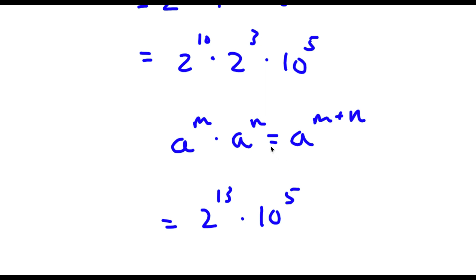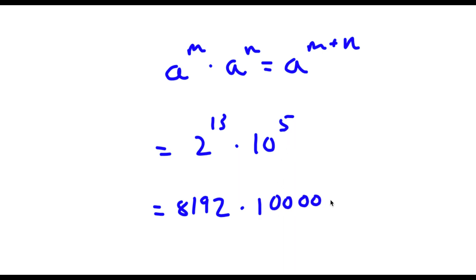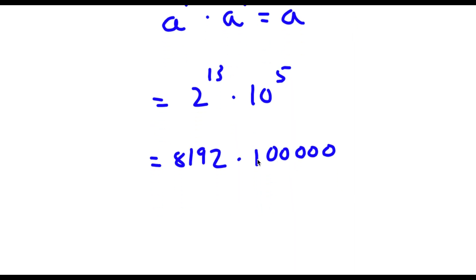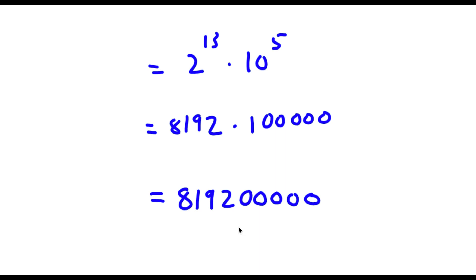And 2 to the power of 13 is equal to 8,192. And 10 to the power of 5 is equal to 100,000 — that's 1 followed by five zeros. Now if I multiply these two, I get 819,200,000. So this is my answer.